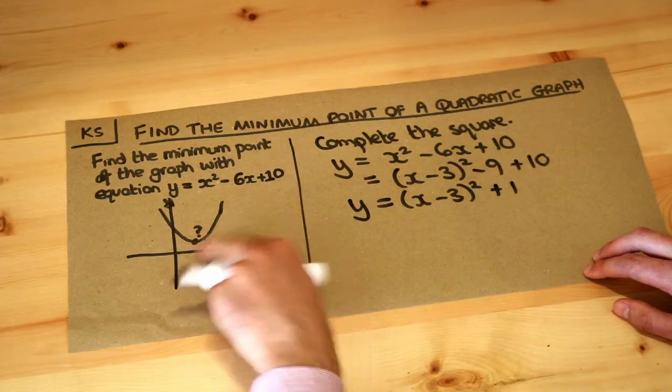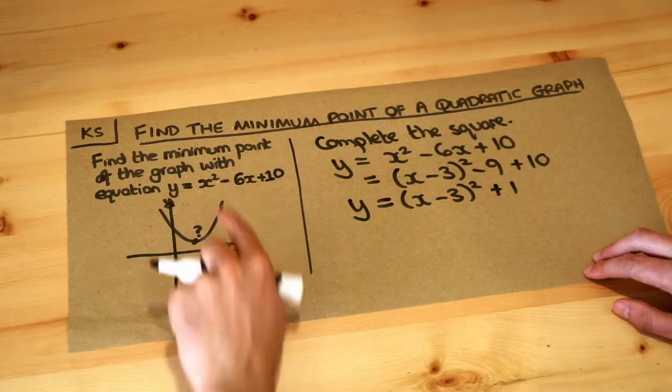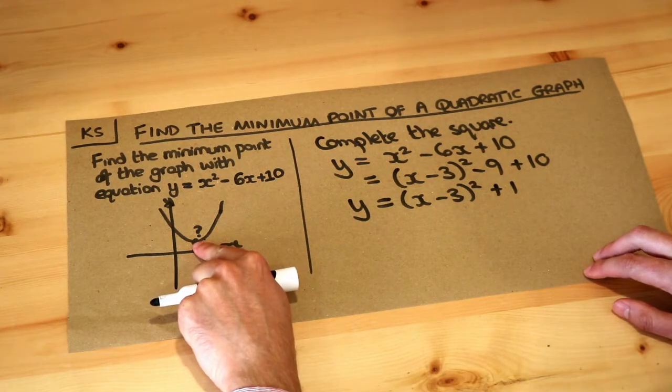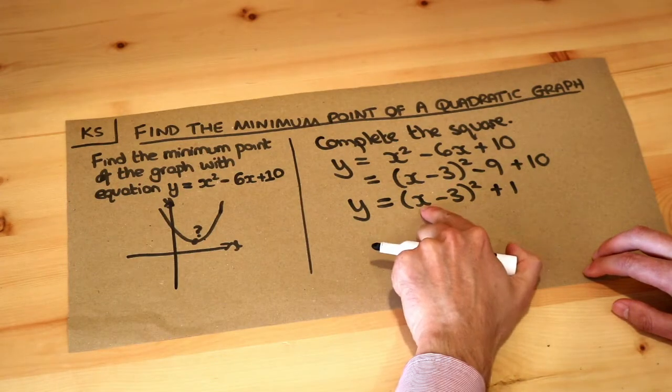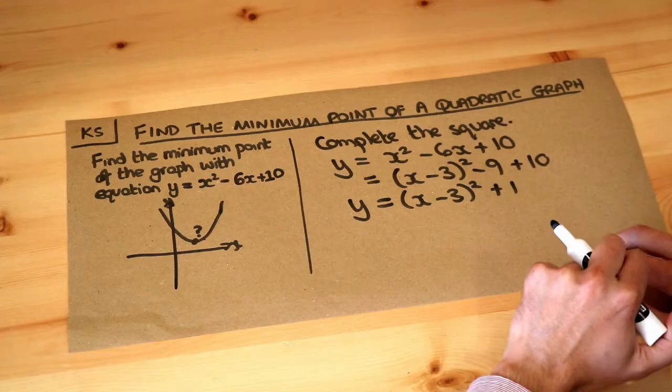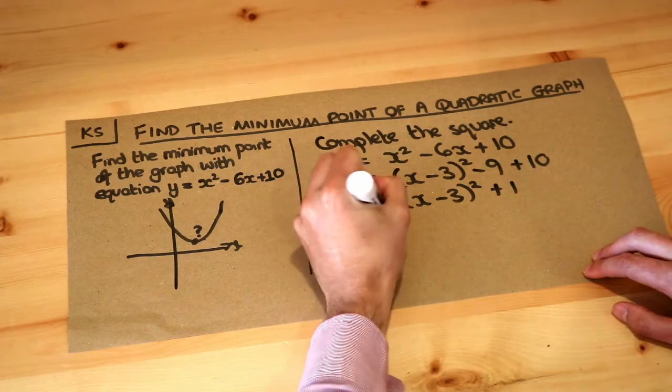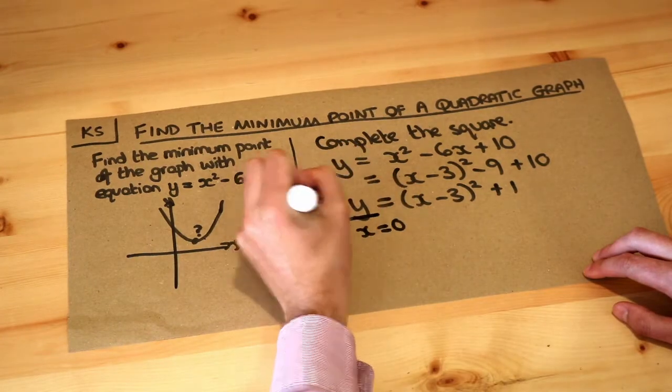Now how does this relate to the minimum point of this graph? Well, we want to get the smallest y value as possible. Let's suppose we were to sub in a value of 0 as x and work out what the y is. You wouldn't usually write this in your working, but this is just a kind of side thing.